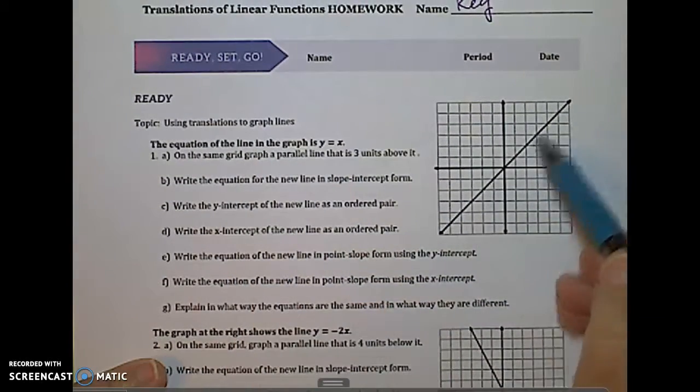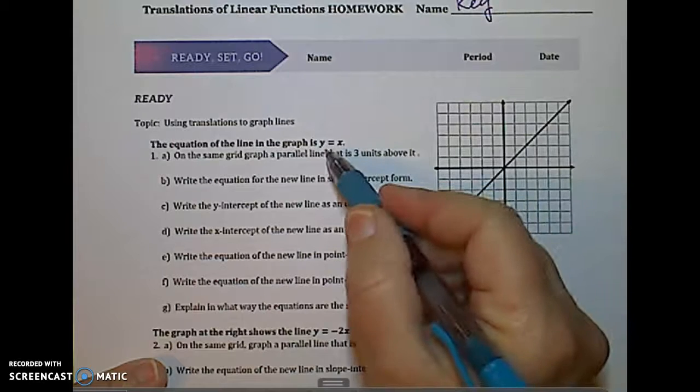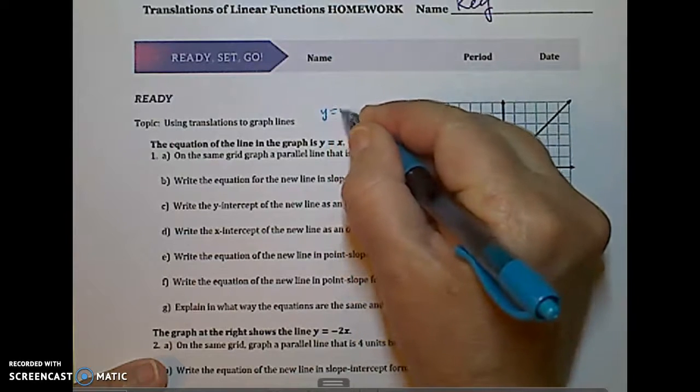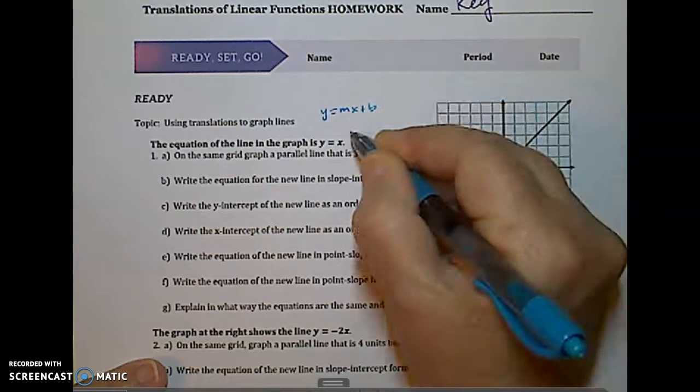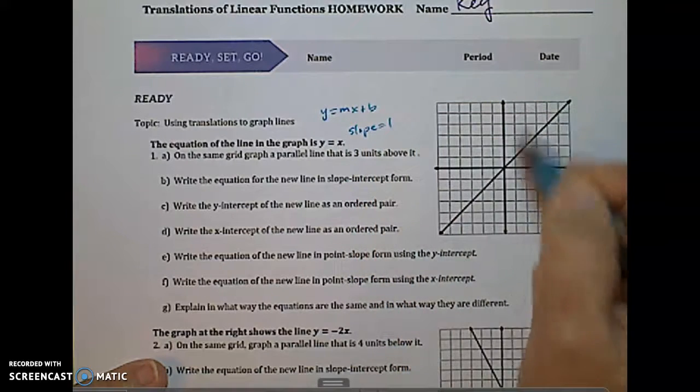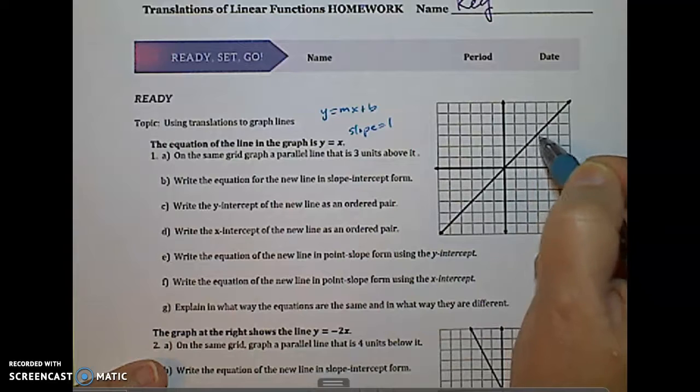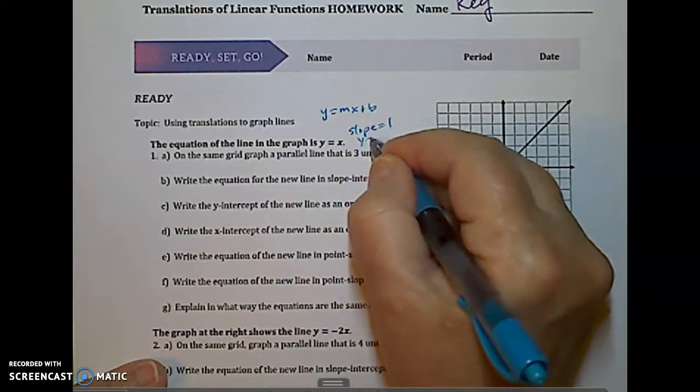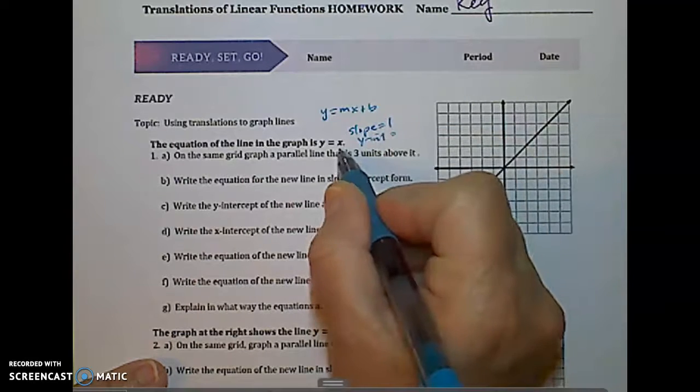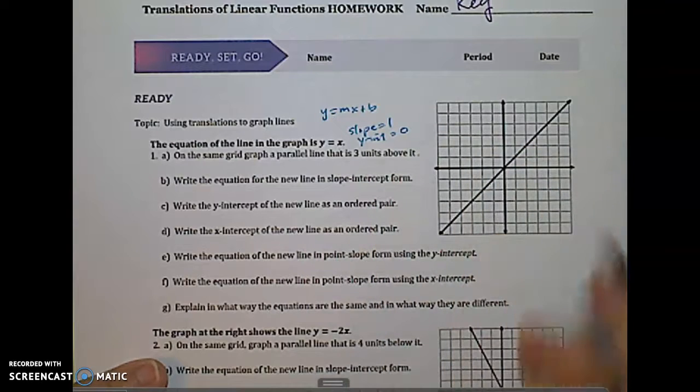The equation of the line is the graph y equals x. So this is the same as, in the form y equals mx plus b, this has a slope of one, which is up one over one. And a y-intercept is equal to zero. There it is at zero.